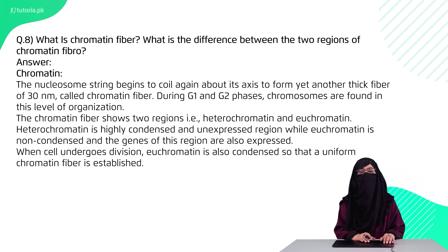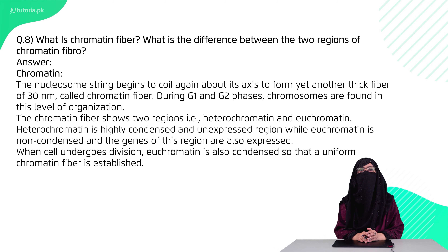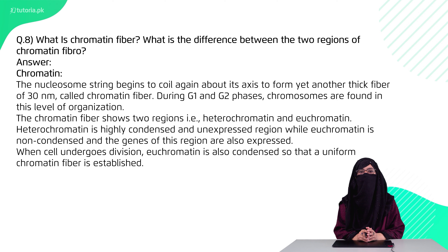Question 8 is: what is the chromatin fiber, and what is the difference between the two regions of the chromatin fiber? Chromatin fiber is the second level of DNA packaging after nucleosomes, in which nucleosomes combine to create a structure of 30 nm. In your cells, DNA is mostly present in this form. In the highly condensed form, we call them heterochromatin, and these mostly contain genes that are not transcribed. In the loosely bounded form, we call them euchromatin.